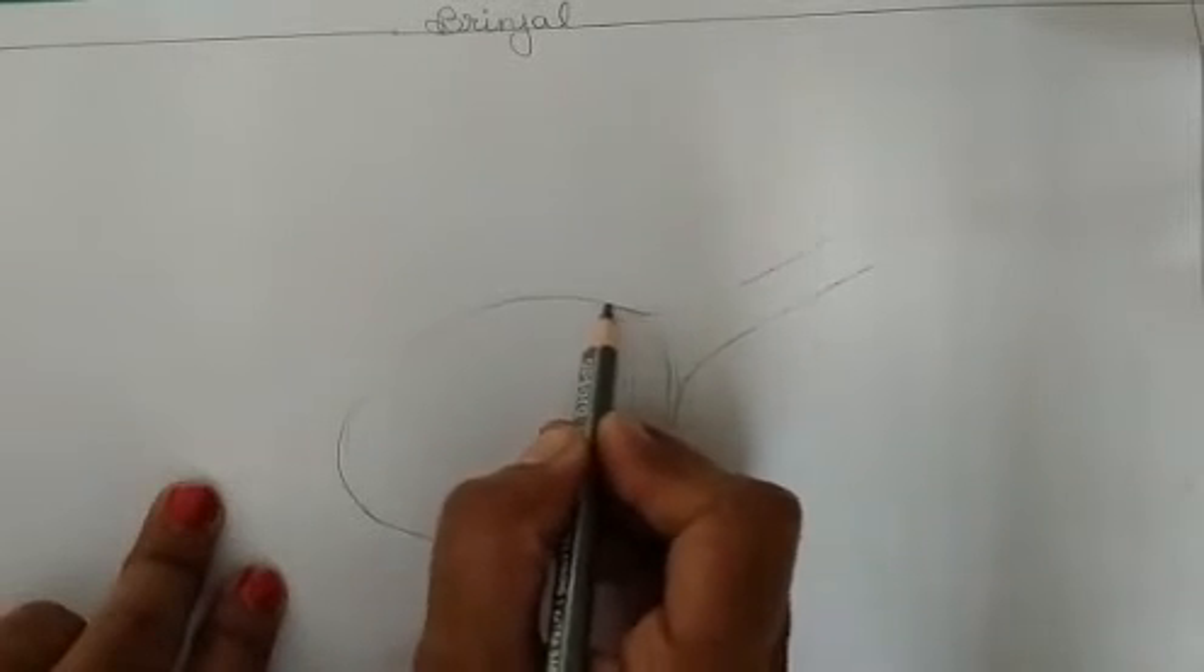Now in third step, we will draw. Now again we will draw. Now again, here we will draw. Then we will draw a horizontal shape like this.